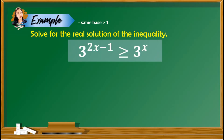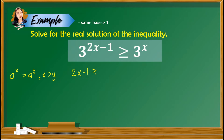For the first example, we need to solve for the real solution of the inequality 3 raised to 2x minus 1 is greater than or equal to 3 raised to x. Based on this given problem, the bases are the same — both 3 — and 3 is greater than 1. We need to follow the property that states that if a raised to x is greater than a raised to y, then x is greater than y. So we take out the exponents: 2x minus 1 is greater than or equal to x.